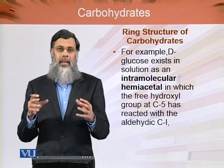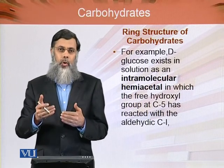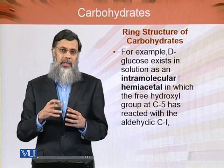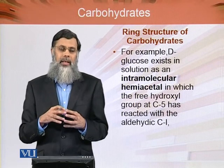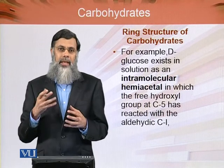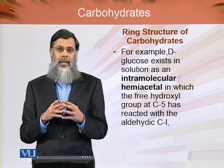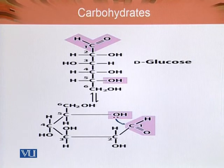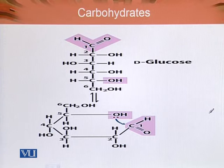This is called an intramolecular hemiacetal group formation. In the next presentation, we will see how the formation of a cyclic intramolecular structure is formed. Now, this is carbon atom number 1, which is the aldehyde — it has C double bond O attached, so it is the aldehyde group.